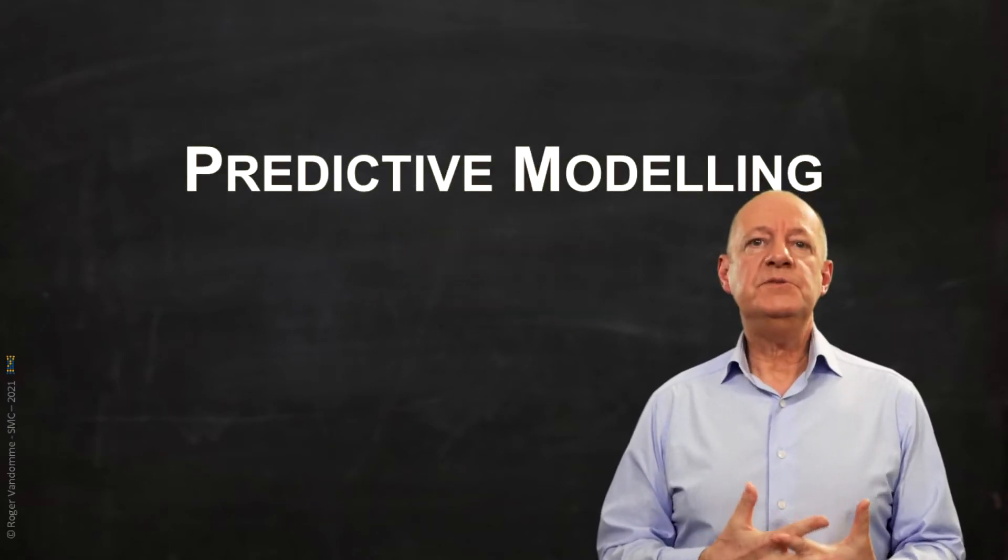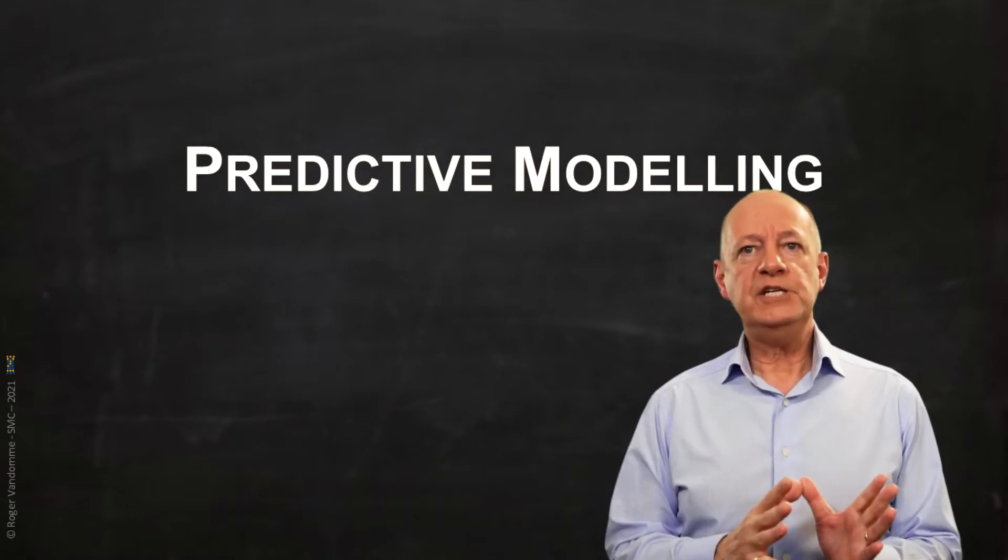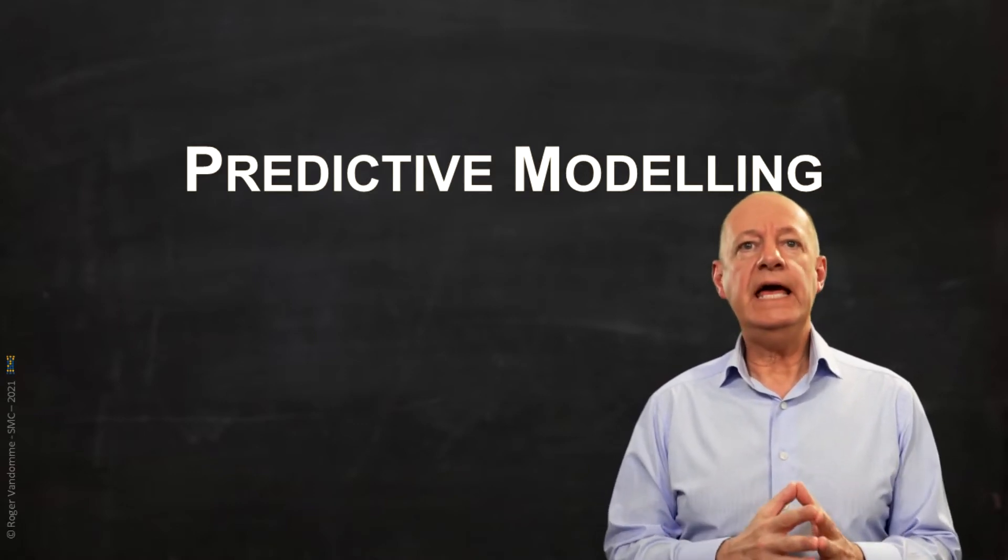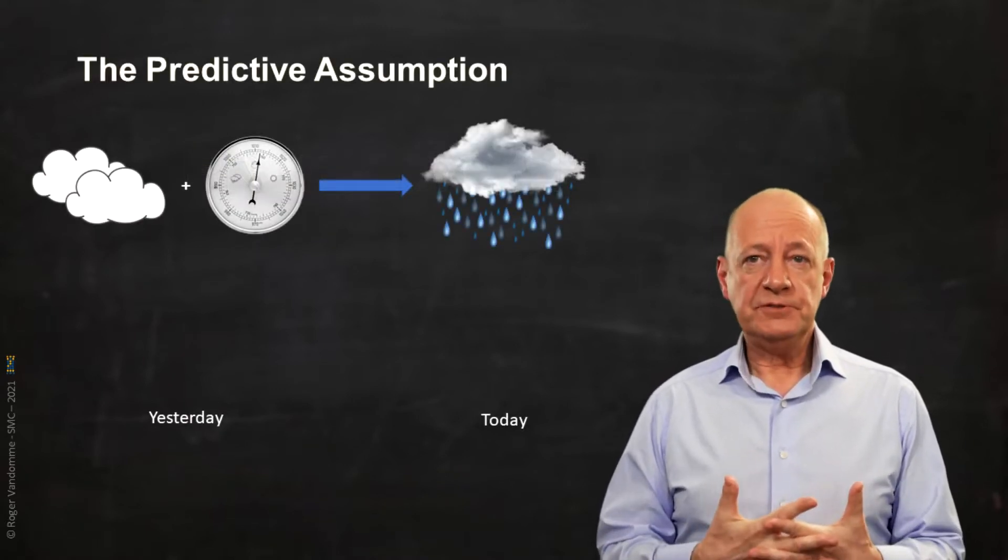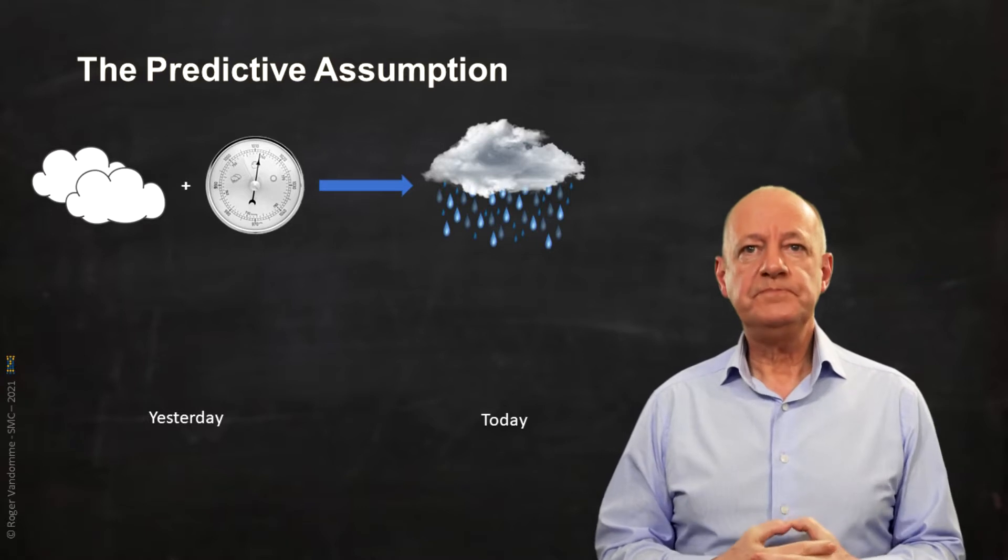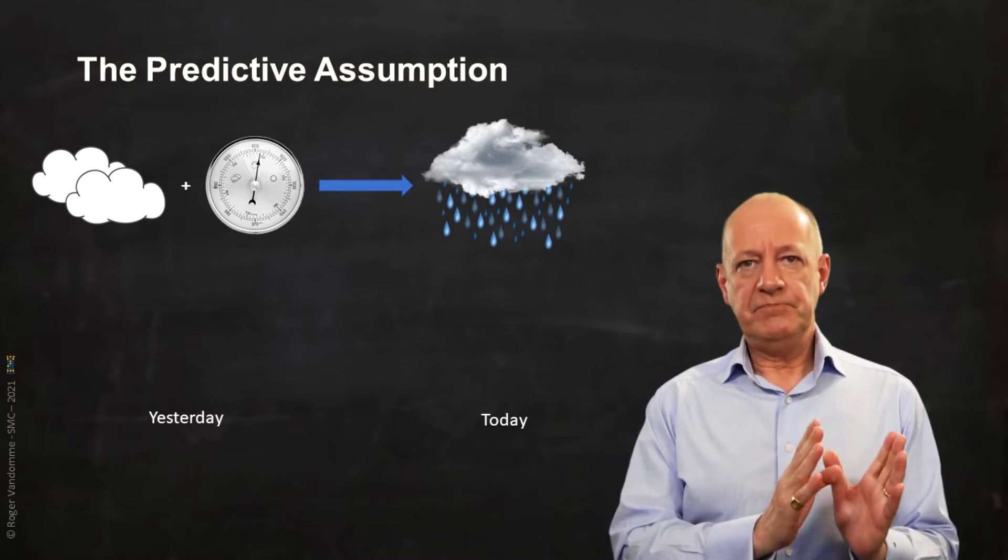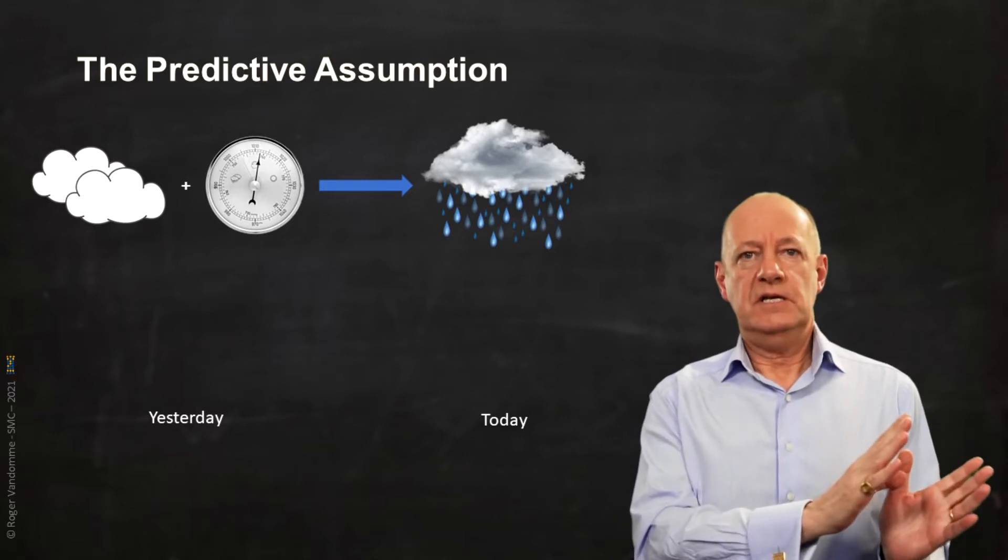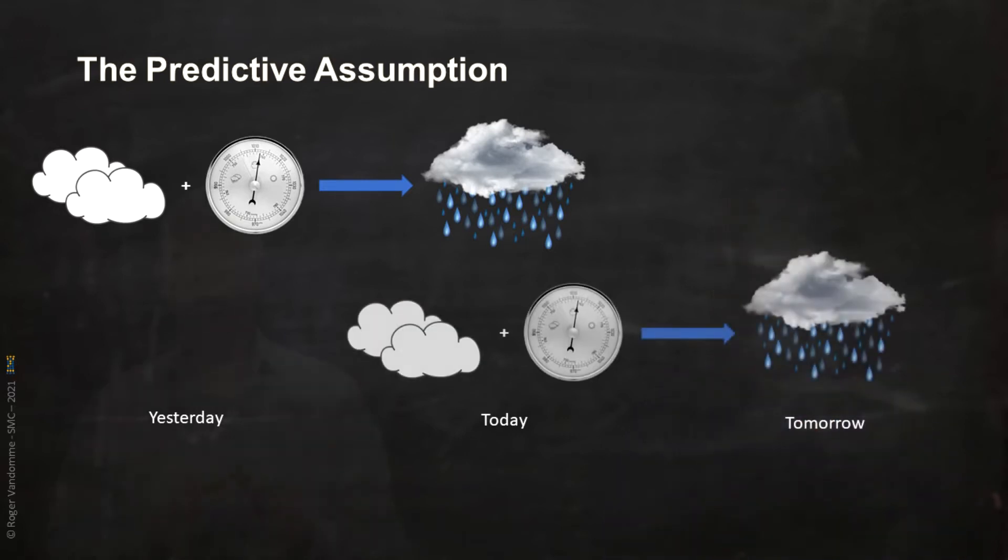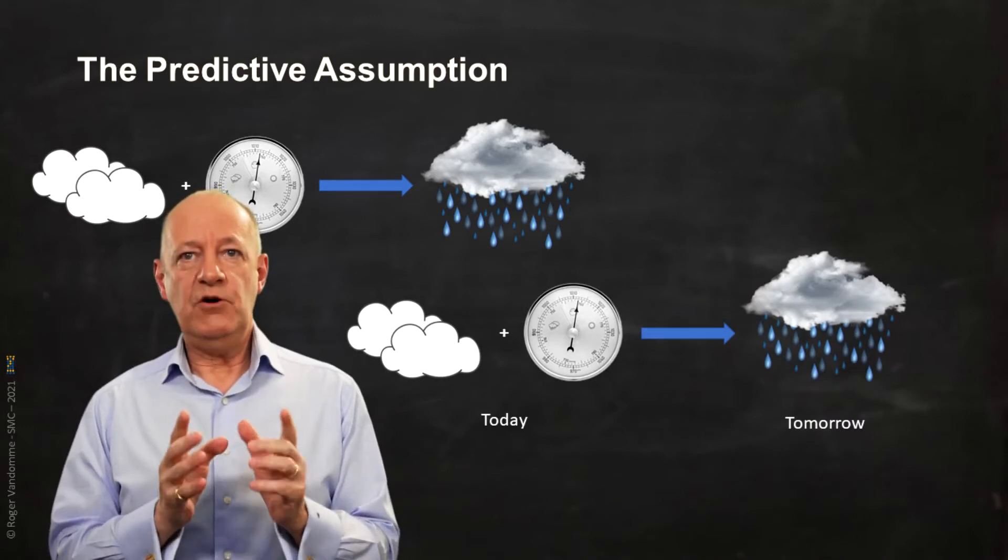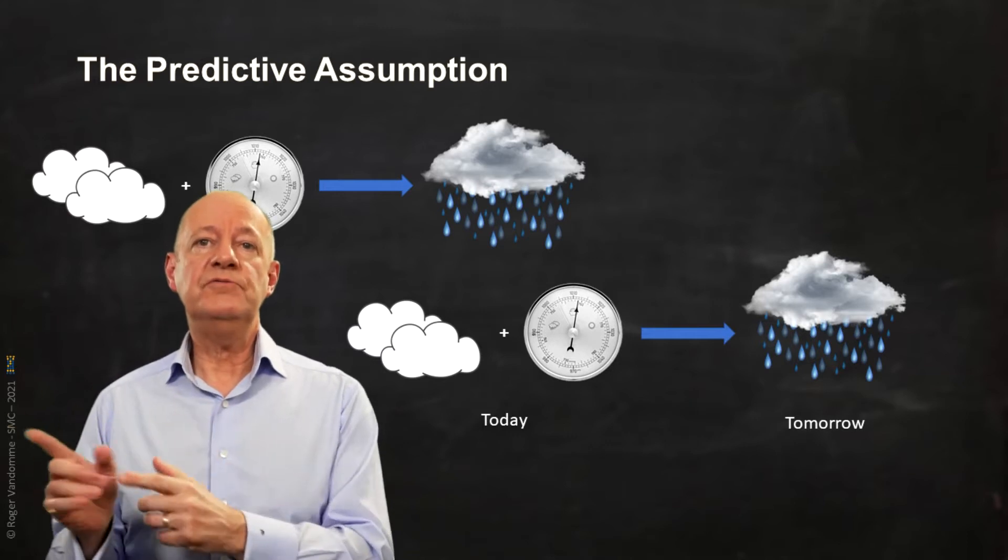Predictive modeling is based on two basic principles, correlation and regression, and on one assumption. The assumption, and it is a big one, is that if an event A occurring in the past has a consequence B occurring in the present, the same event A occurring in the present will have the same consequence B in the future.